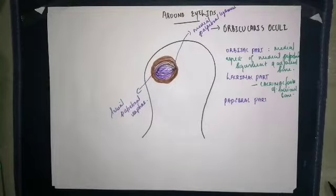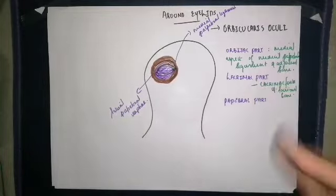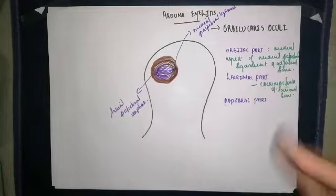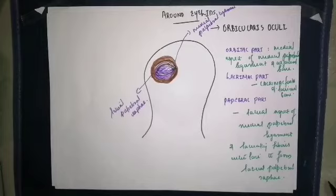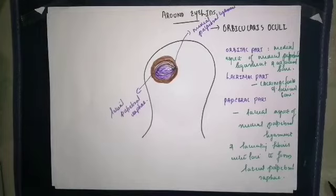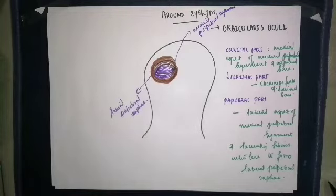Unlike the orbital part, the palpebral part does not return to the same point of origin. Instead, on the lateral aspect the fibers interlace to form the lateral palpebral raphe. That is the key difference between the orbital and palpebral parts.